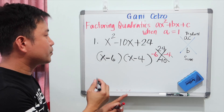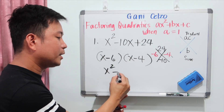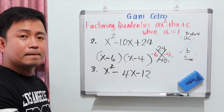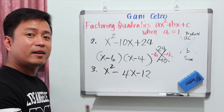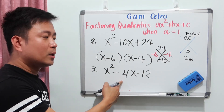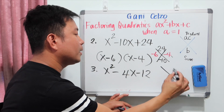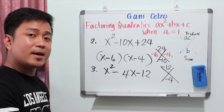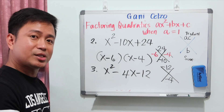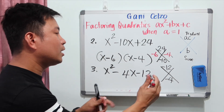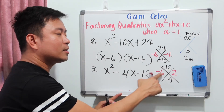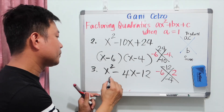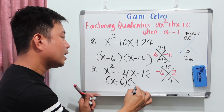Try this next problem: x squared minus 4x minus 12. The product is negative 12 and the sum is negative 4. We need two numbers that multiply to negative 12 and add up to negative 4 — that means one negative and one positive. The numbers are negative 6 and positive 2. Negative 6 times 2 is negative 12, and when you add them it's negative 4. So the factors are x minus 6 and x plus 2.